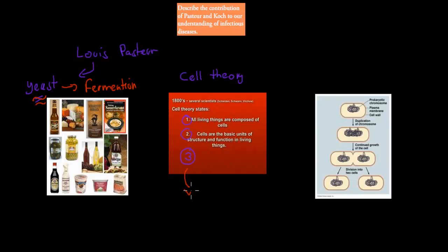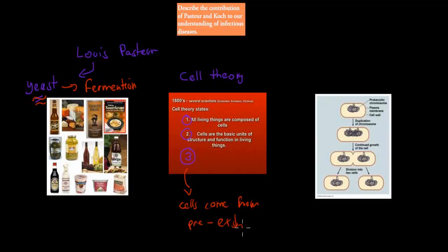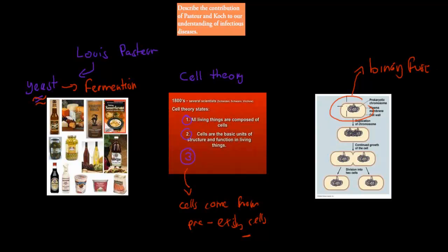Pasteur helped us understand the third part of the Cell Theory: that cells come from pre-existing cells. The fermentation experiment was the first step for him to realize there's more to life than things spontaneously coming about - that things actually have an origin. For example, bacteria can replicate by binary fission, which means one bacteria becomes two, and that's how we can go from very little to having quite a large colony of bacteria in a pretty short period of time.